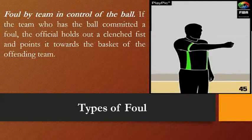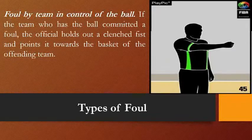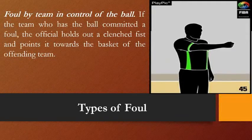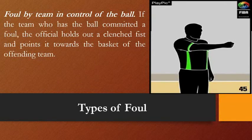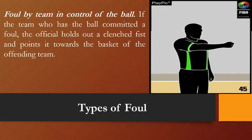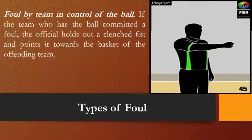Another foul type is foul by team in control of the ball. If the team with the ball commits a foul, the official holds out a clenched fist and points it over the basket of the offensive team. This follows the charging foul or offensive foul call — the signal indicates the team in control of the ball committed the foul.